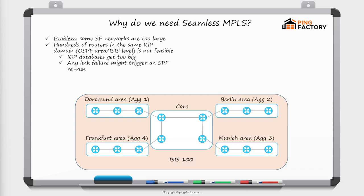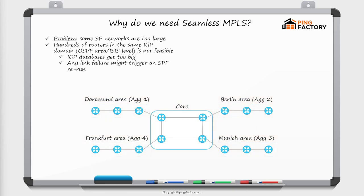The second reason is that any link failure will trigger an SPF rerun. If a link in the core fails, this information gets flooded to routers in all different geographical parts of the network, and all routers need to perform an SPF rerun. With just a few routers this isn't a big issue, but with 200 routers — imagine how many links there are, how much information needs to be flooded, and how frequently SPF reruns would occur. These will increase hardware requirements. Now let's see the solution.